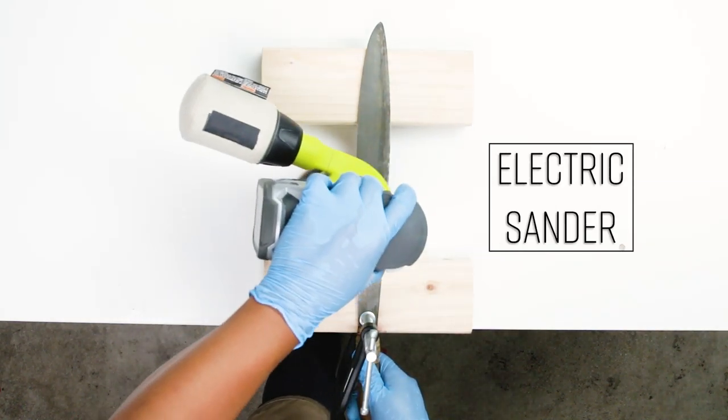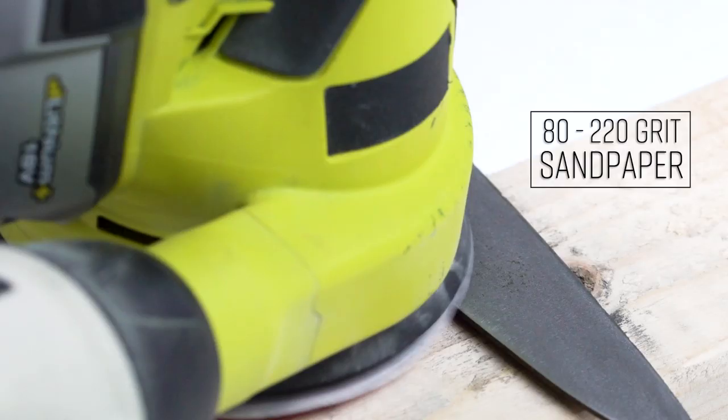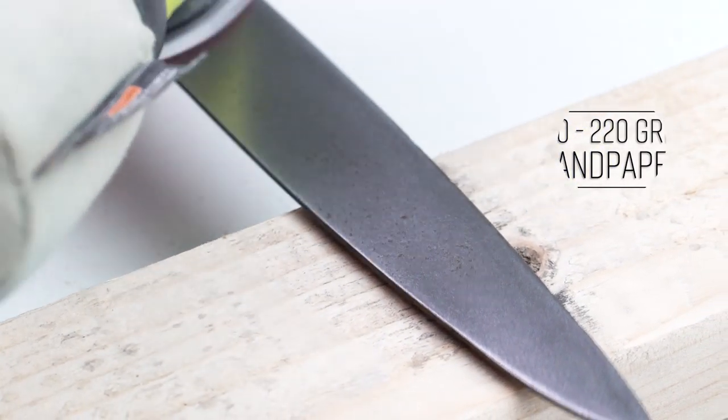Next I used an electric sander. I started with 80 grit and then gradually worked my way to 220 grit sandpaper.